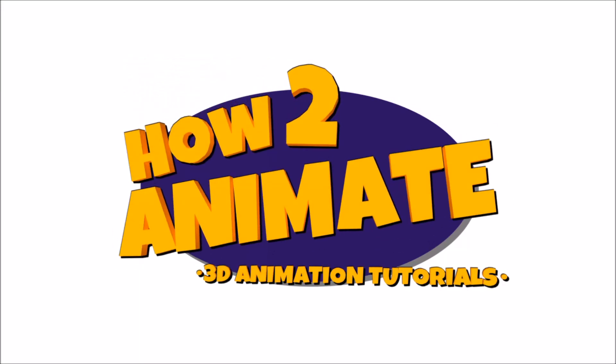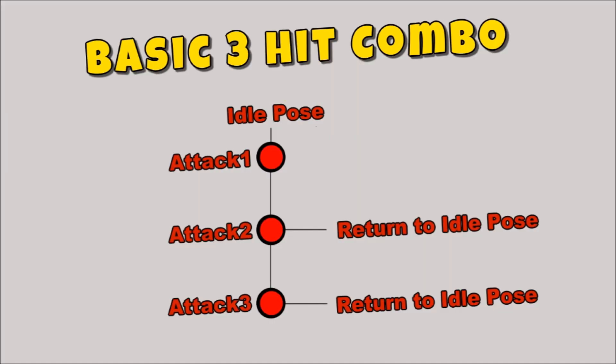Hello guys and welcome back to the How To Animate YouTube channel. In today's video we're going to be carrying on with our video game series and I'll be showing you how to do a combo attack. It's quite typical in games to have a sequence of moves that the player does — if you push the button once you'll get an attack, and the more you push the button the further down that sequence it will go.